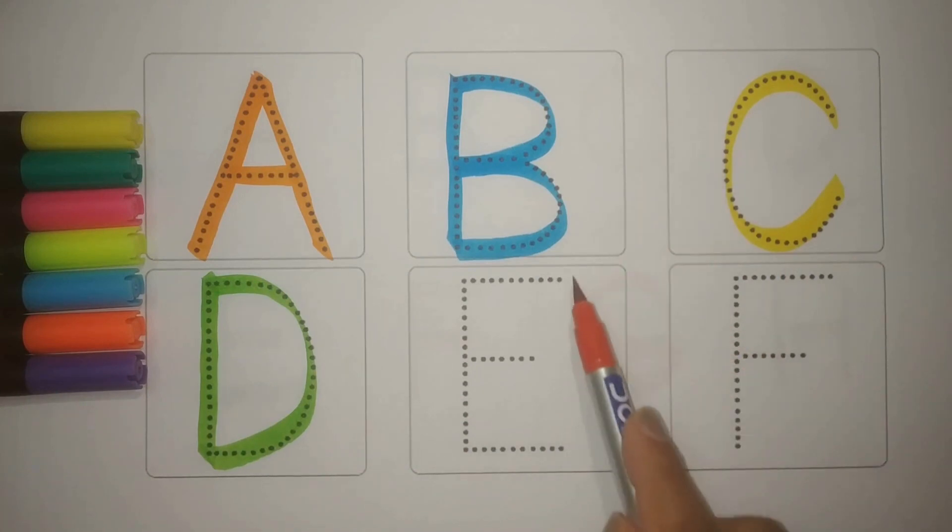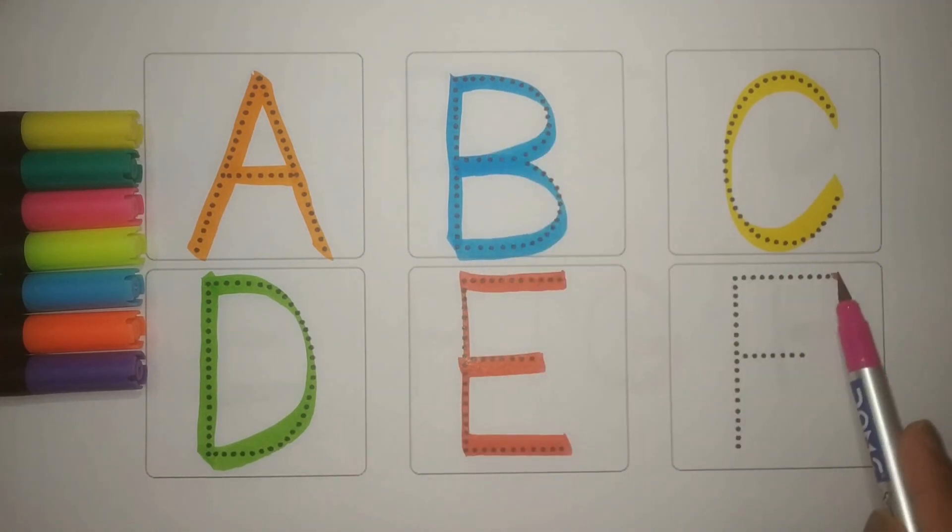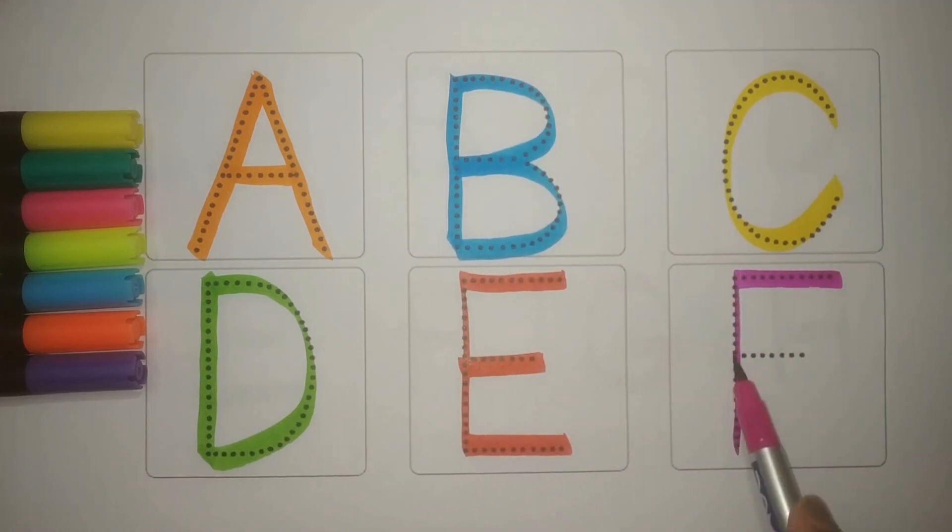Red E. E for Egg, Unda. And Pink F. F for Flag, Chanda. Let's revise. Chalo phir se karte hai.